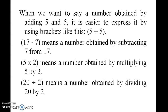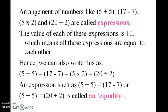When we want to say a number obtained by adding 5 and 5, it is easier to express it by using brackets like this: (5 + 5). Similarly, (17 - 7) means a number obtained by subtracting 7 from 17. These are called expressions.